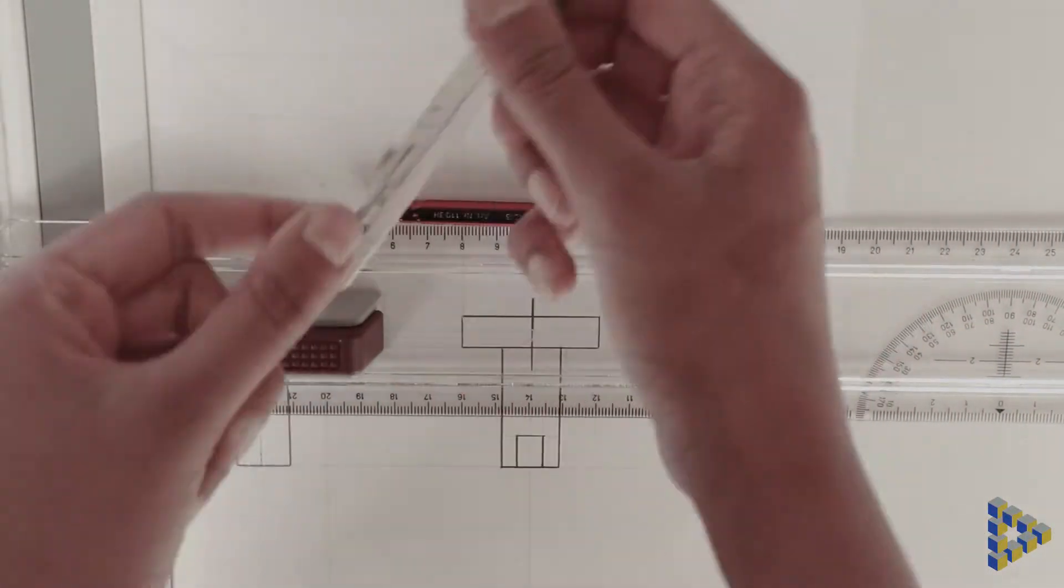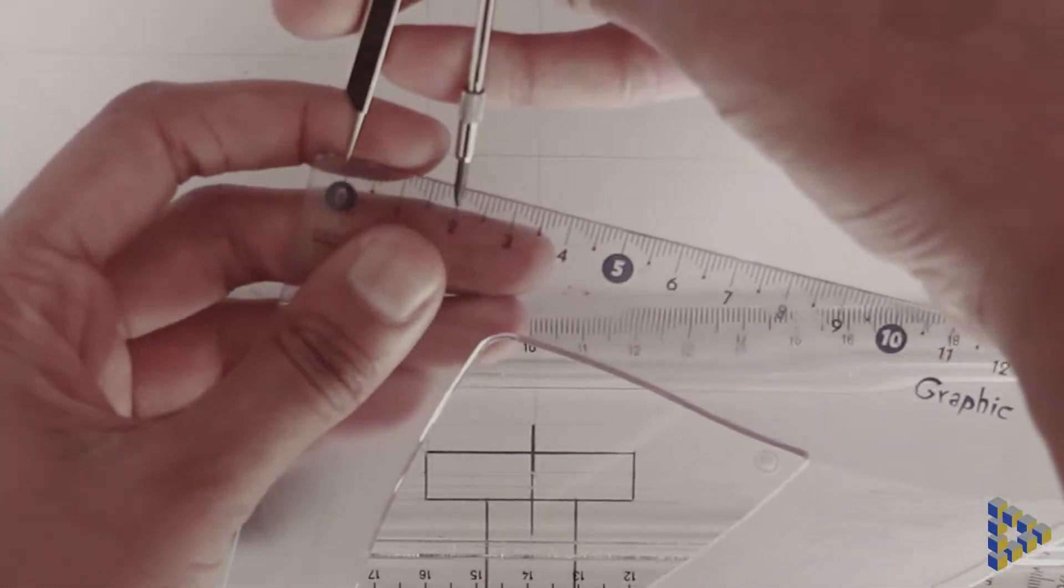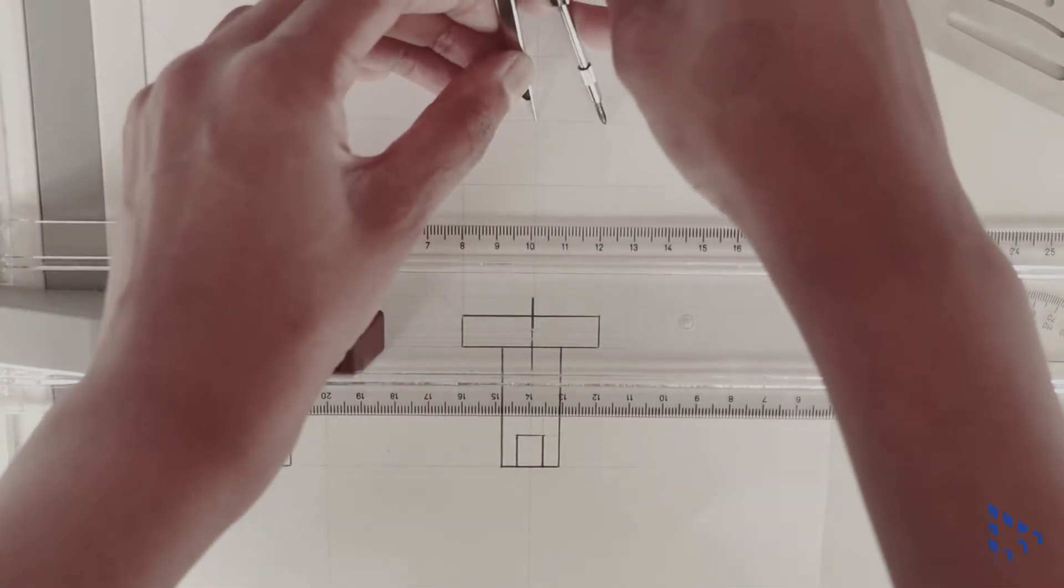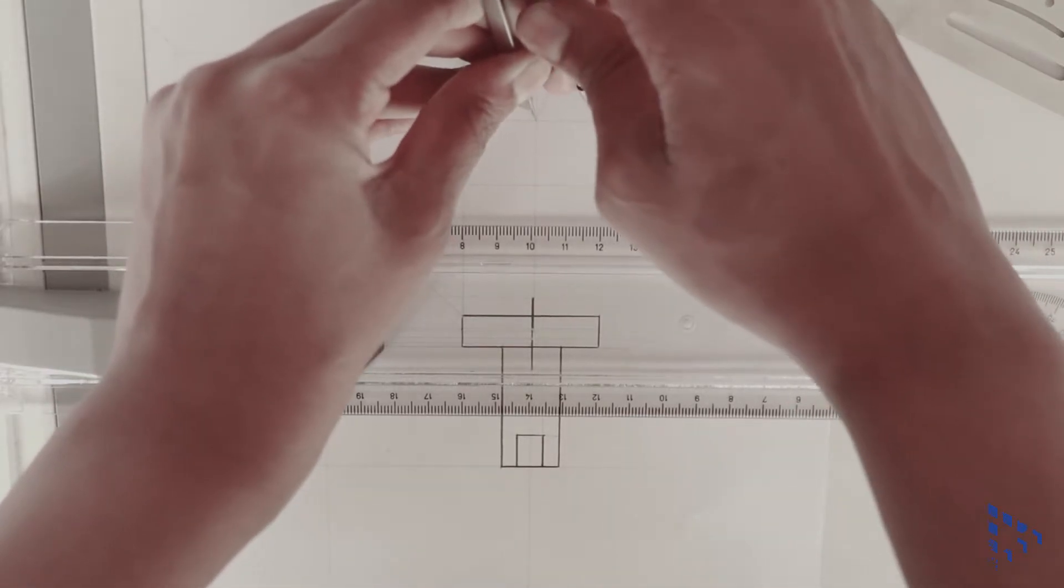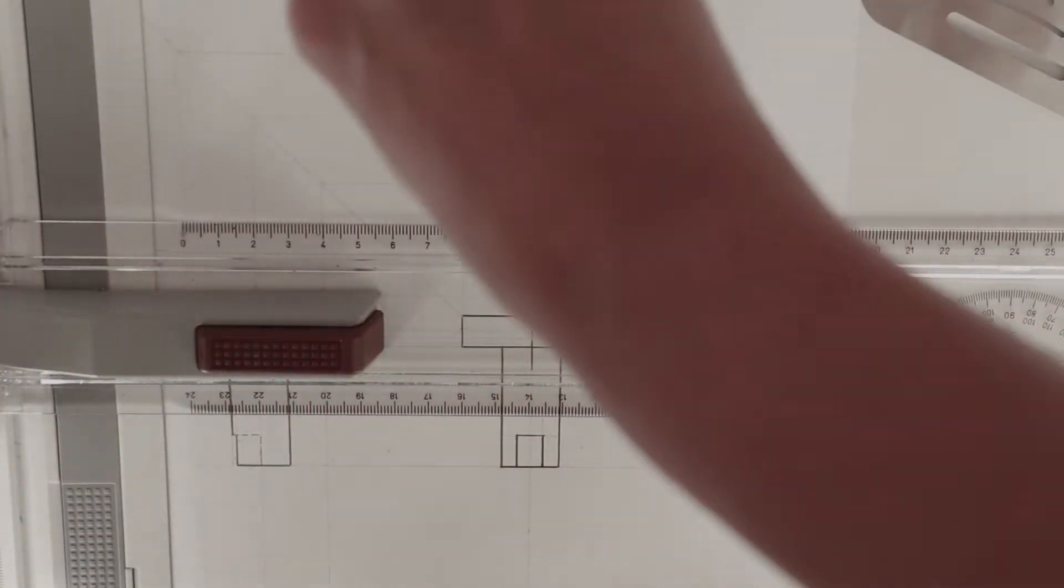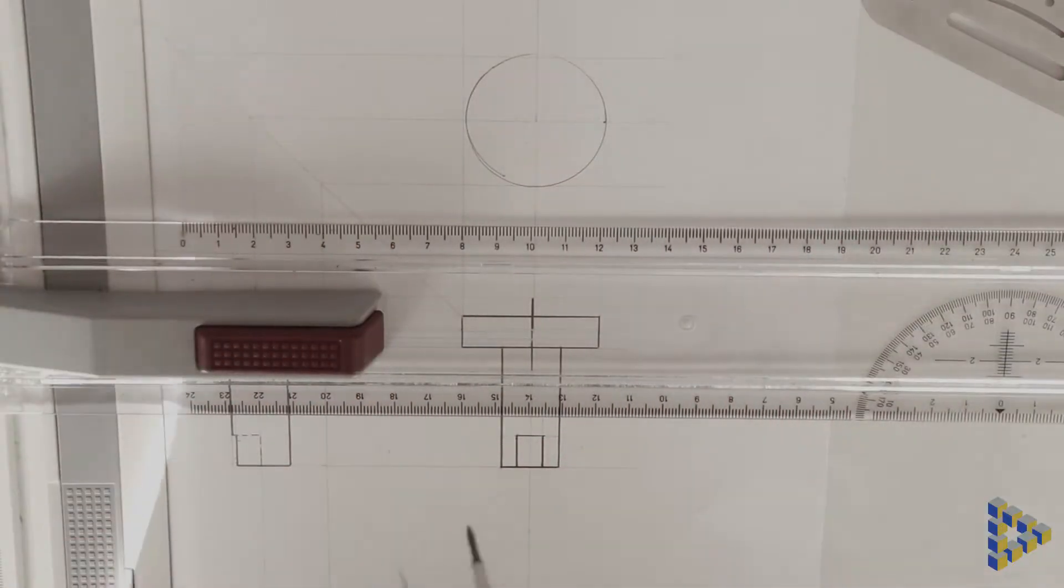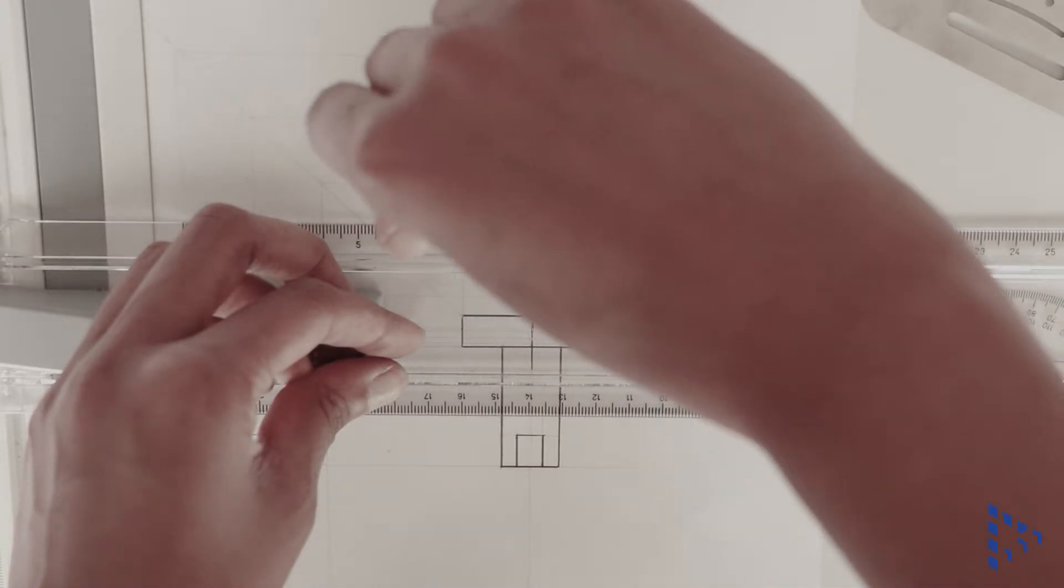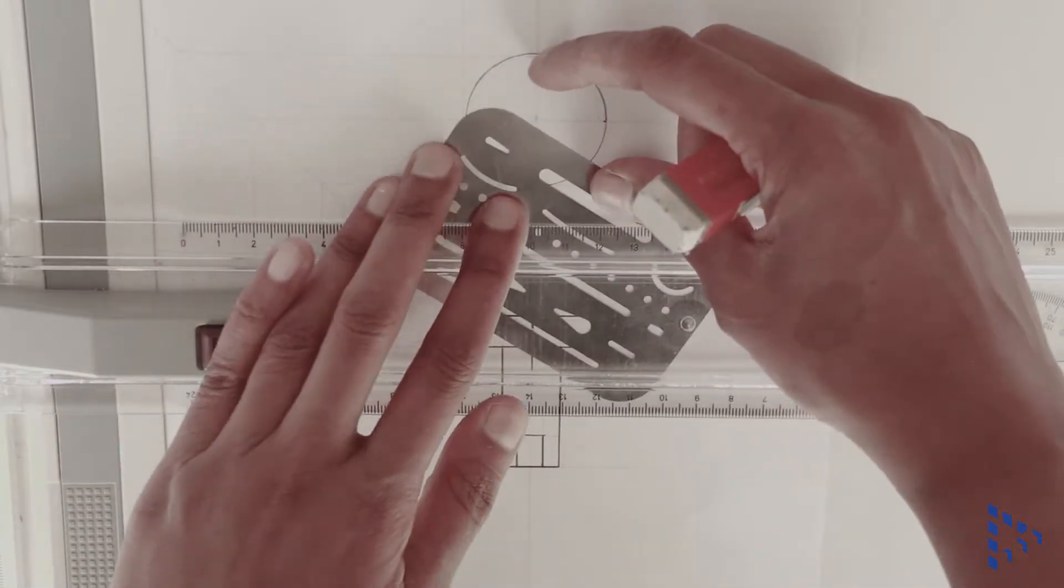I then measure the radius of 20 millimeters on my set square and construct a circle. I use my eraser shield to neaten it up.